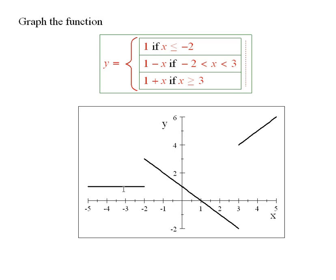And you see, if you do that, you get this picture right here. This is the graph of 1 minus x on the interval from -2 up to 3. This is the graph of 1 plus x on the interval from x bigger than or equal to 3, and so forth.